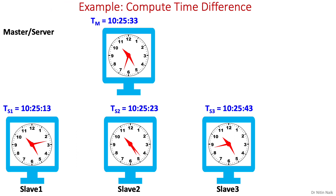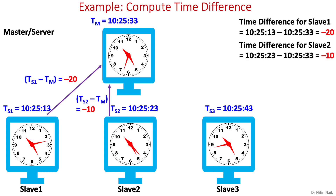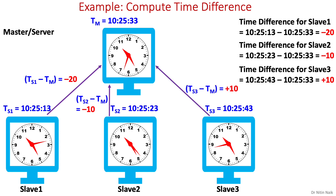In the first step, the master computes the time difference between its clock and the clock of all non-faulty slaves. Here we have three non-faulty slaves, so the master will compute the time difference with each. The time difference with slave 1 is minus 20 seconds, with slave 2 is minus 10 seconds, and with slave 3 is plus 10 seconds. It also computes the time difference with its own clock, which is zero.